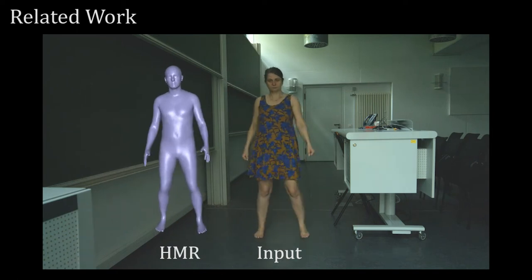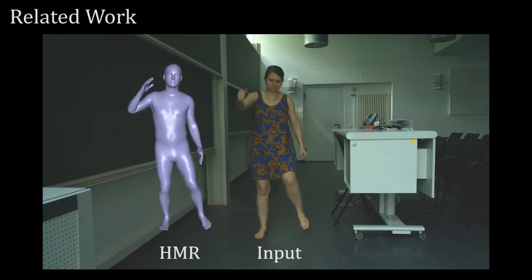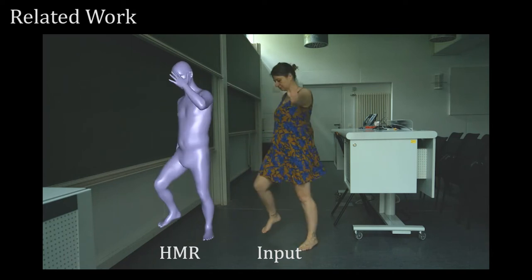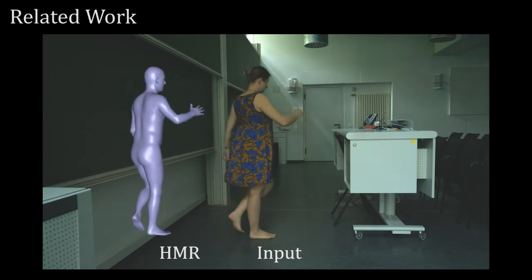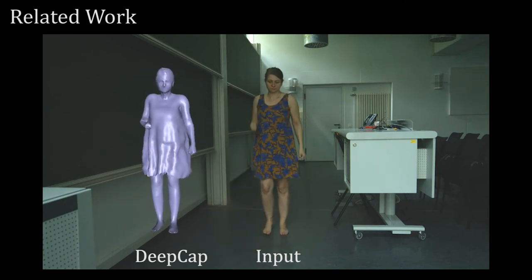Recent approaches to monocular human performance capture have shown compelling results for dense tracking of the full body from a single RGB camera. However, existing methods either do not estimate clothing at all,